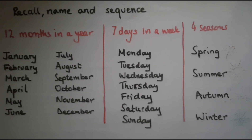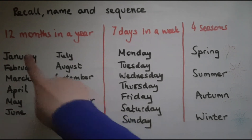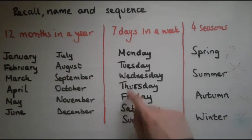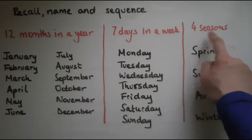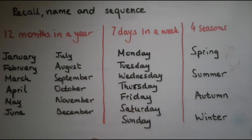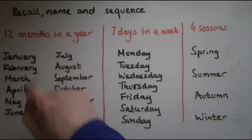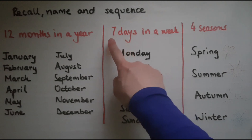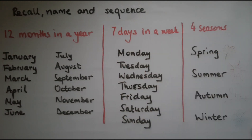So we've gone through the 12 months in a year, the seven days in a week and the four seasons in a year. I've put them in order and I've given you some clues to remember. So keep practicing till you know how many months in a year, how many days in a week, how many seasons in a year and how to order them.